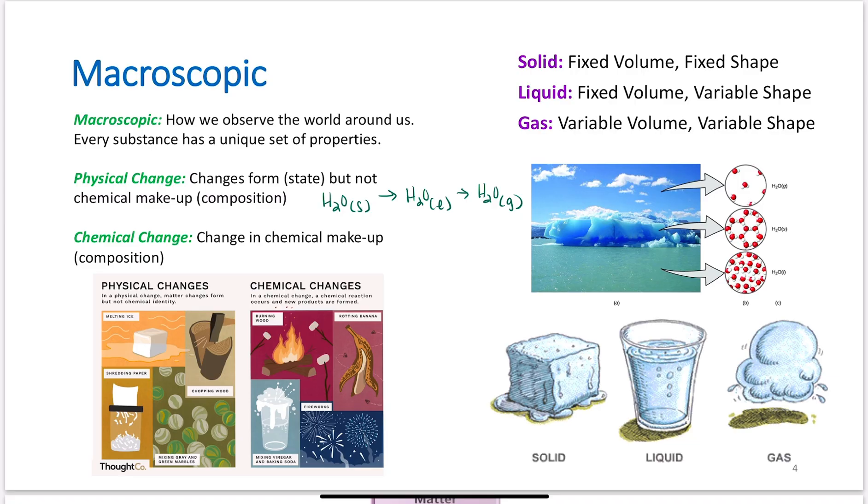Those are all physical changes. I haven't changed the actual chemical compound. A chemical change is something that does change the chemical makeup or chemical composition of the species. If I burn something, if I put a piece of wood in a fireplace, I have changed the chemical composition of that species. If I have a banana that's rotting, the rotting is a chemical reaction that's happening. If I mix vinegar, which is acetic acid diluted, with baking soda, it makes CO2 gas and it bubbles up at you. That's a chemical change. Letting off fireworks, chemical change.